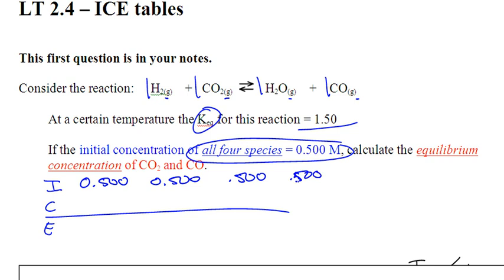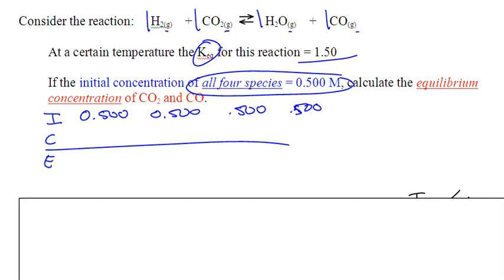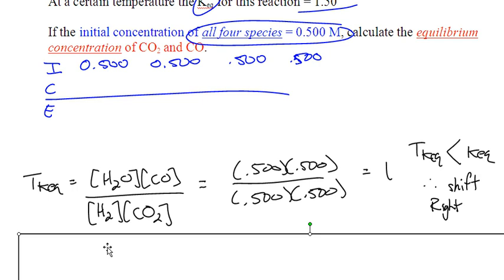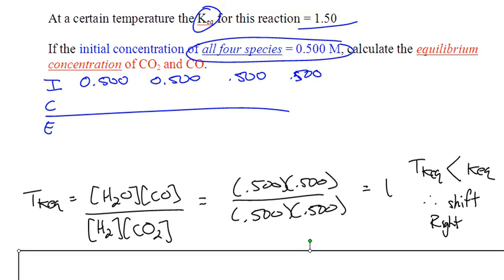We do not know which way this is going to shift, so we need to find the trial Keq and compare it to the given value. The trial Keq expression is products over reactants. Plugging in the initial data — 0.5 for all four — that equals 1. So the trial Keq equals 1. The actual Keq is 1.5. The trial Keq is too small — not enough products — so this equilibrium is going to shift right to eventually equal the real Keq.